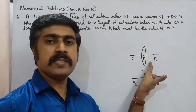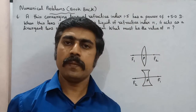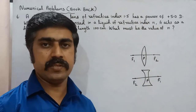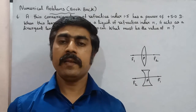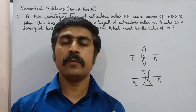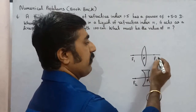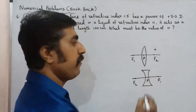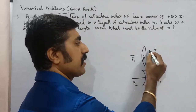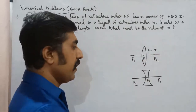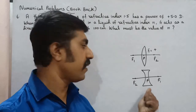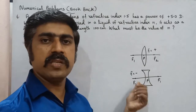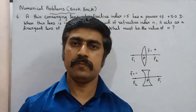When the lens is placed in air it acts as a converging lens as usual. But when introduced into a liquid, it acts as a diverging lens — that is, a concave lens. For the diverging lens in liquid, the positive x-axis is to the right side, and the focal length is negative since it is a diverging lens.